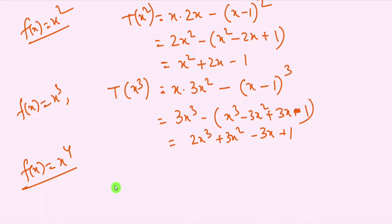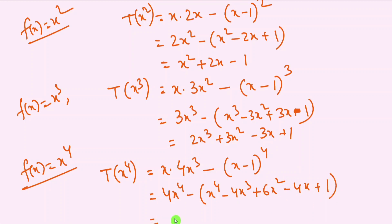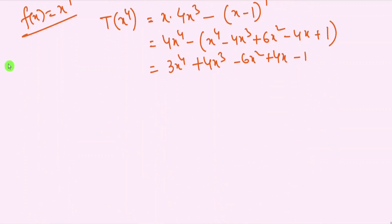For f(x) = x⁴, T(x⁴) = x·4x³ minus (x−1)⁴, which gives 4x⁴ minus (x⁴ − 4x³ + 6x² − 4x + 1), equal to 3x⁴ plus 4x³ minus 6x² plus 4x minus 1.